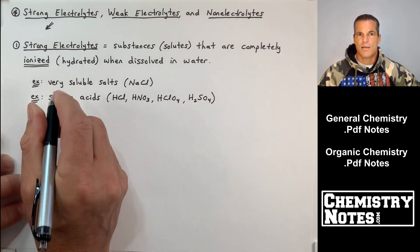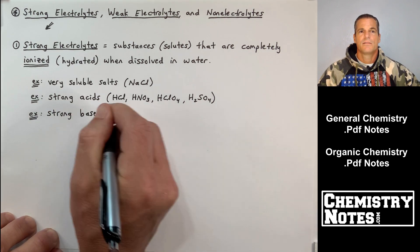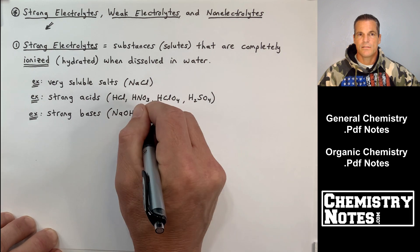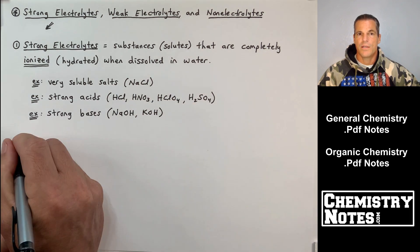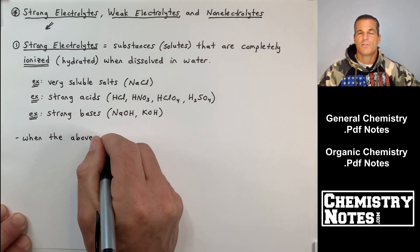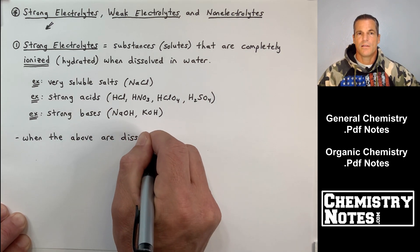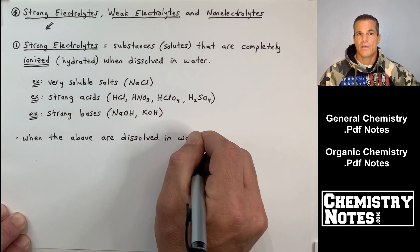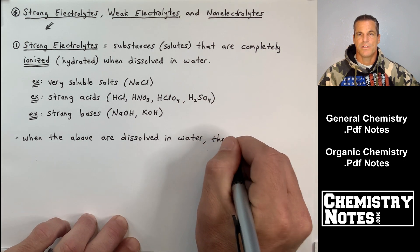NaCl, KBr, etc. So very strong acids like HCl, HNO3, HClO4, and then H2SO4, and also very strong bases. And the two most popular strong bases are NaOH and KOH.